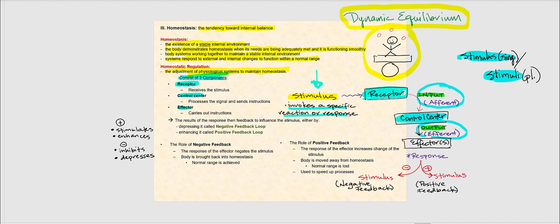The output efferent signal goes to the third component of homeostatic regulation, called the effector — or effectors if plural. The effector receives those output efferent signals sent by the control center, and if it responds to them, it is defined as the effector. An effector could be a gland, a tissue, or an organ — as long as it responds and carries out the instructions received from the control center.